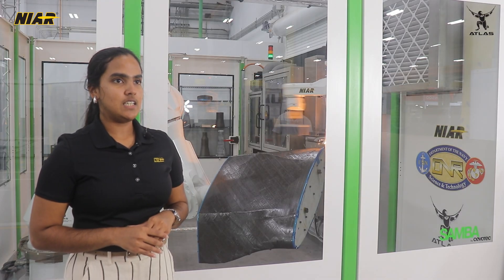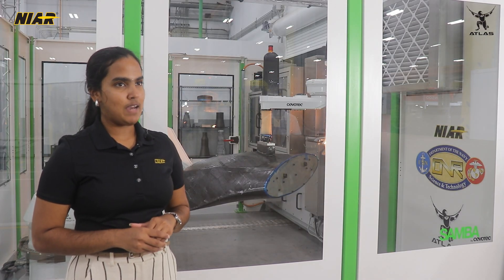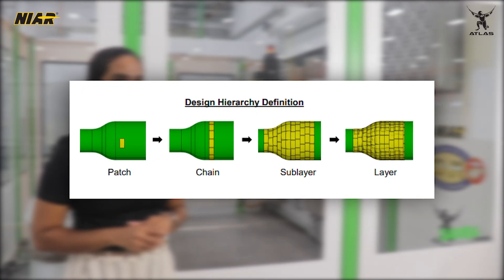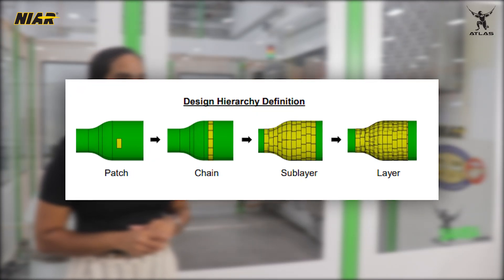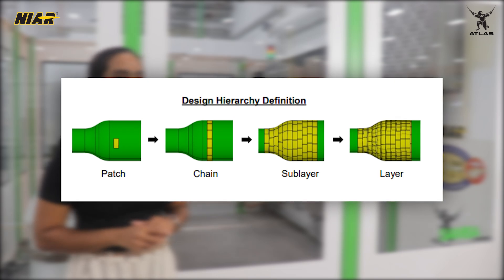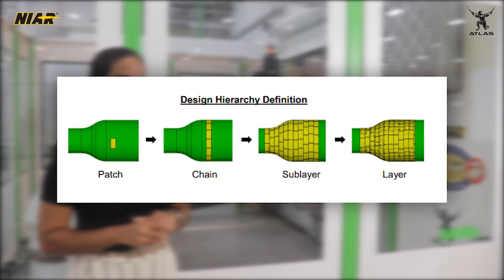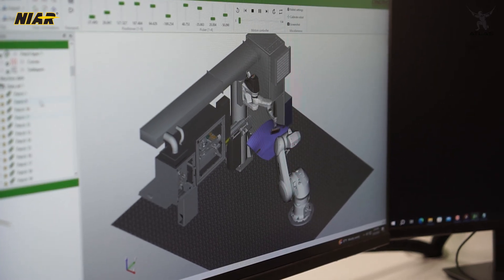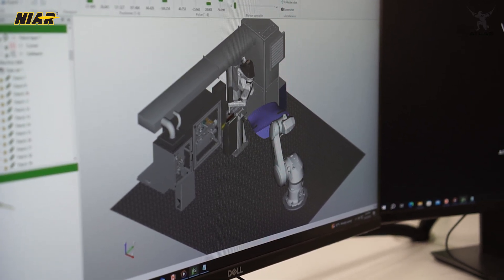The smallest entity in a fiber patched laminate is a patch. A collection of patches forms a chain. Multiple chains form a sublayer, which is equivalent to a ply. A collection of sublayers gives a laminate. Once the programmer creates this fiber patched laminate, he then moves on to the Motion Artist module inside the Artist Studio software, where we are able to simulate the robot movements for each of these plies. Once the robot movements are checked for collision, the patch data is exported to the machine for manufacturing.